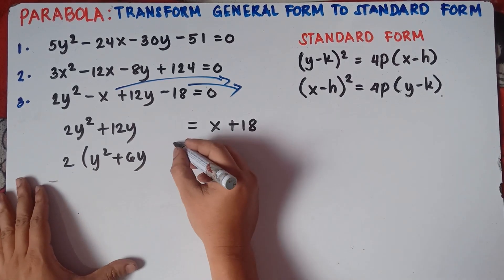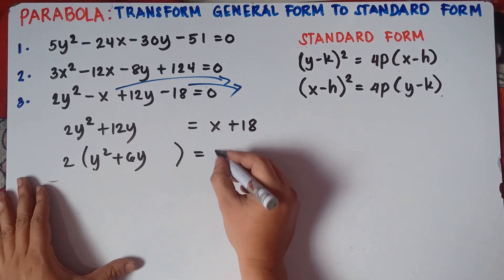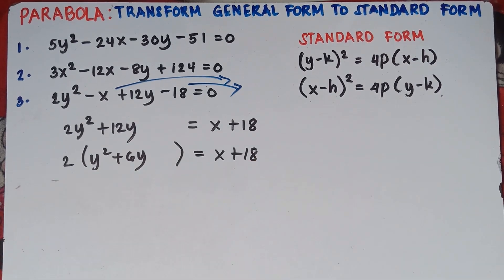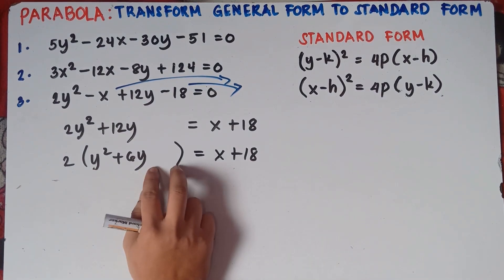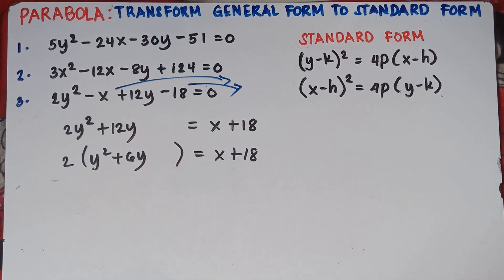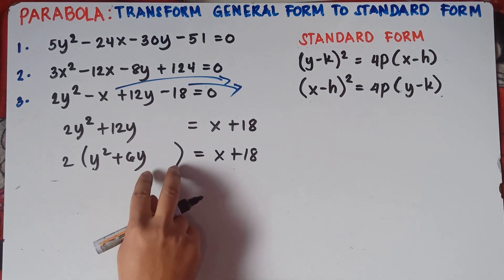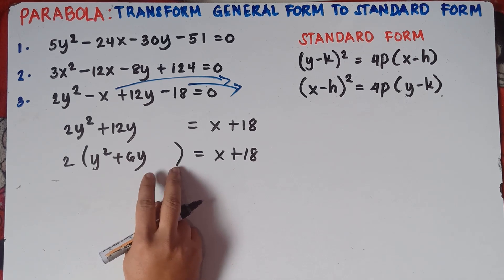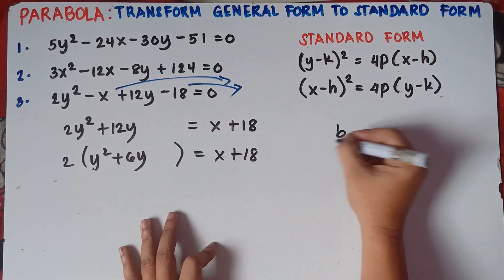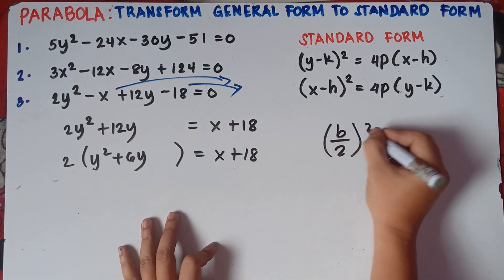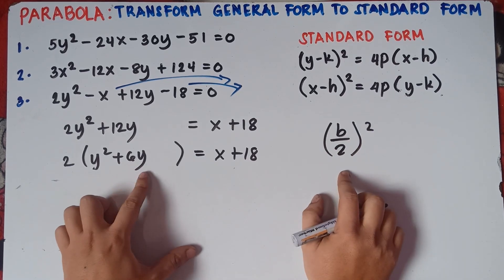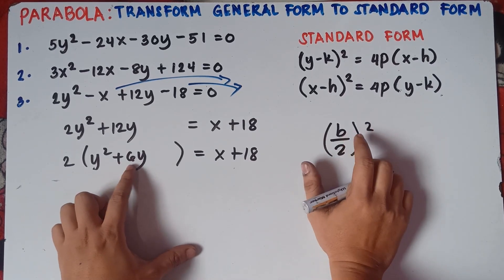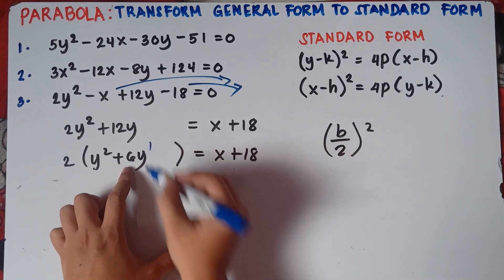Put a space, then equals, and copy x plus 18. The next step is completing the square — we need to add a new constant. To find that constant, use the formula (b/2) squared. The value of b is the coefficient beside y with exponent 1, which is the linear term. So b is 6.